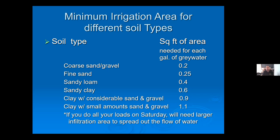With roughly a 20-gallon machine, each mulch basin will be about two to three square feet. You're going to be irrigating maybe four to six trees per load of laundry — these are rough numbers since every site is a little different, but it gives you a quick rule of thumb for how big your mulch basins should be.